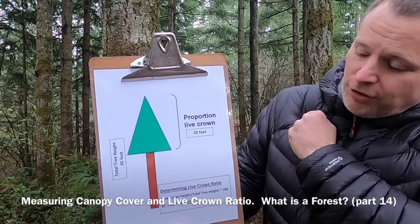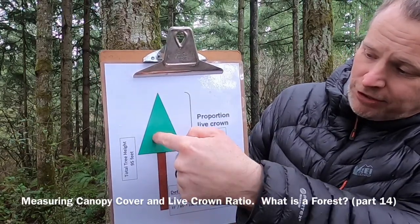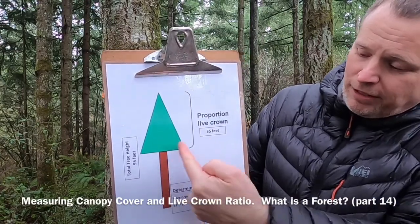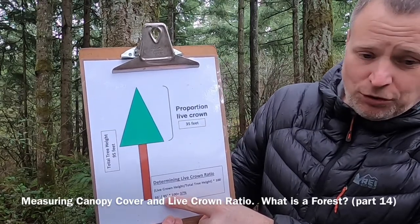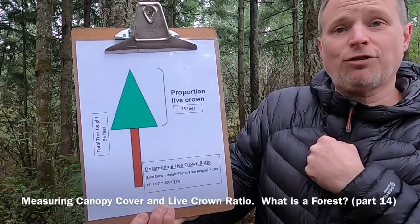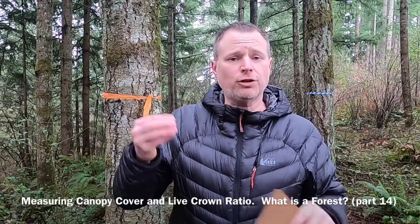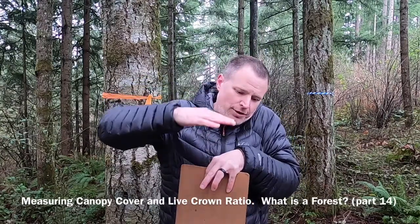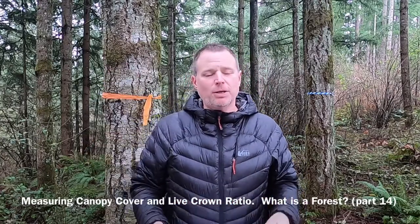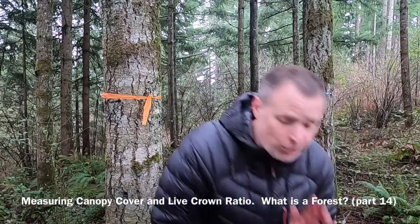Live crown is something we often like to record, and it's very simple to do. We measure the total height of the tree, then we measure the height of the live portion — looking for a side of the tree that has green branches on a conifer going all the way up. We take that live crown portion, divide it by the total height of the tree, and it gives us our percentage of live crown. We can often just look and estimate 70, 60, 50 percent, and it paints a picture of how this forest looks, including the overstory, the shrub layer, and how much live crown is in those trees.